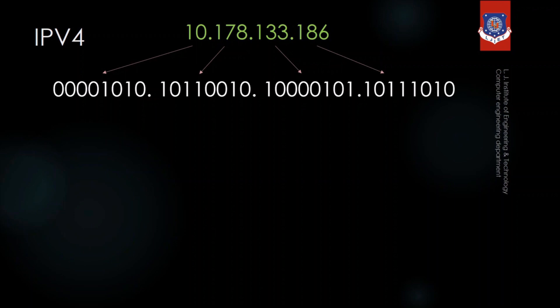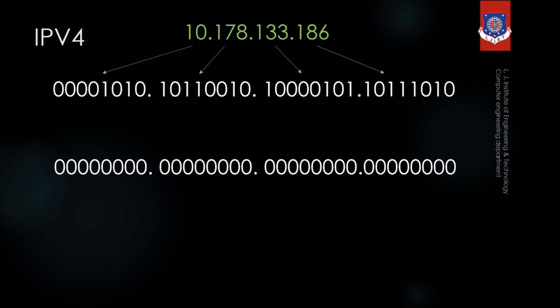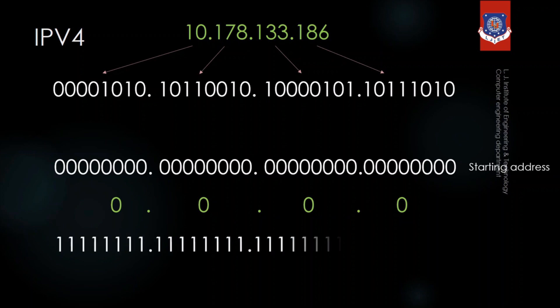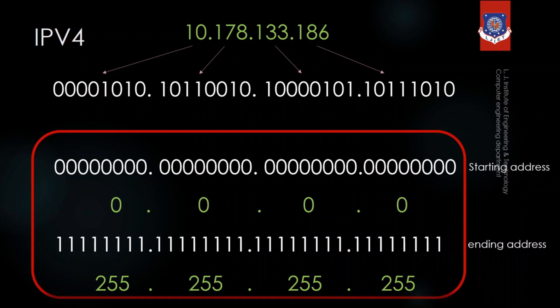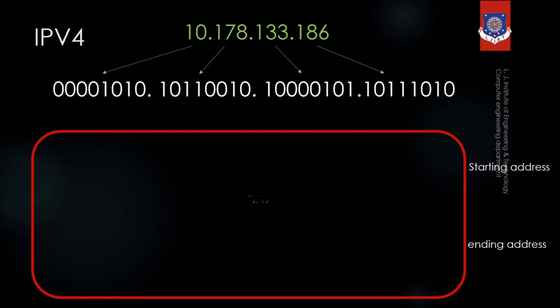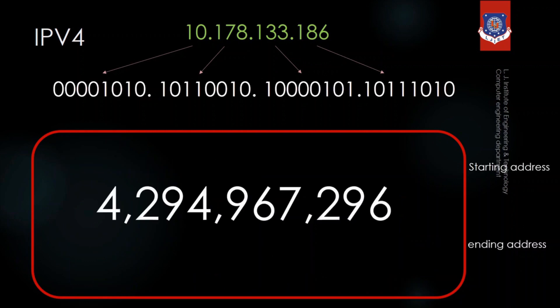To find the starting and ending address of IPv4 — the range — the starting address has all bits as 0, giving 0.0.0.0, and the ending address is 255.255.255.255. The total number of IPv4 addresses is 2 raised to 32, which equals 4,294,967,296 IP addresses.